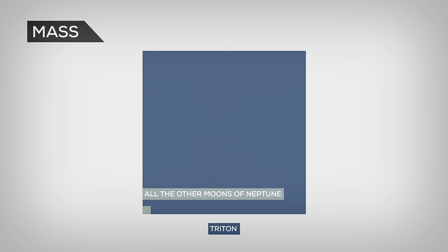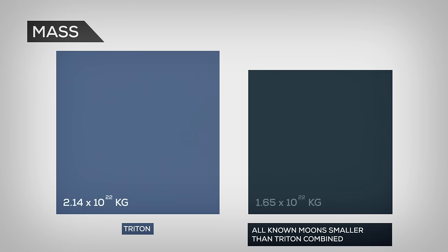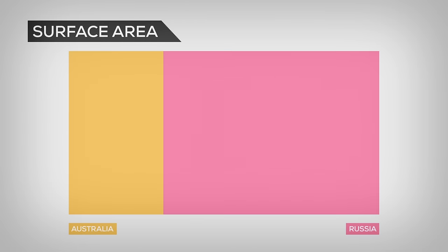99.5% of all the mass around Neptune is concentrated in Triton. It's the seventh biggest moon and more massive than all other known moons in the solar system that are smaller than itself combined. Its surface area is about as big as the mainland of Russia and Australia together.